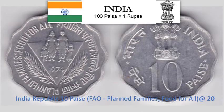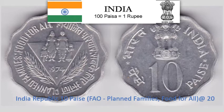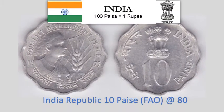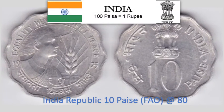India Republic 10 Paise — FAO, Planned Families, Food for All 1974. 2.9 gram Aluminium scalloped coin with 12 notches, 26 mm diameter. Krause Reference No. 28. Approximate market value Rs. 20.